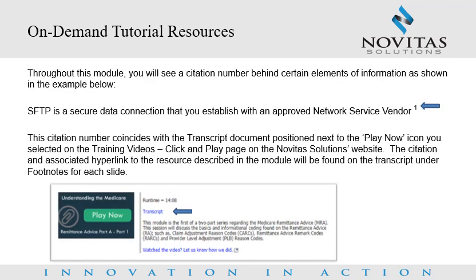Throughout this module, you will see a citation number behind certain elements of information. This citation number coincides with the transcript document positioned next to the Play Now icon you selected on the Training Videos Click & Play page on the Novitas Solutions website. The citation and associated hyperlink to the resource will be found on the transcript under footnotes for each slide.